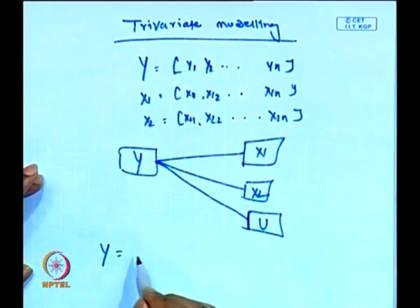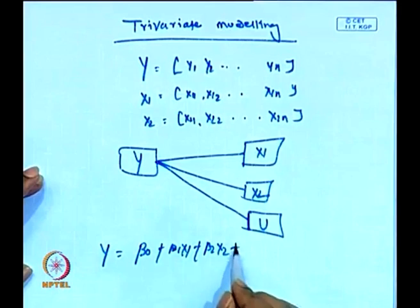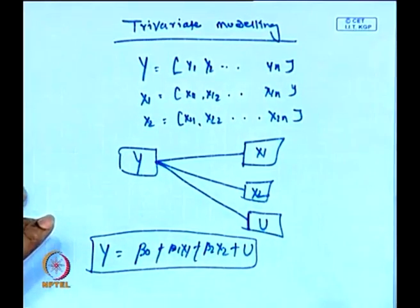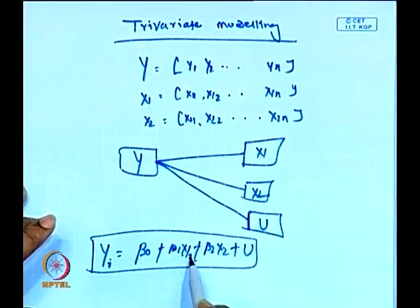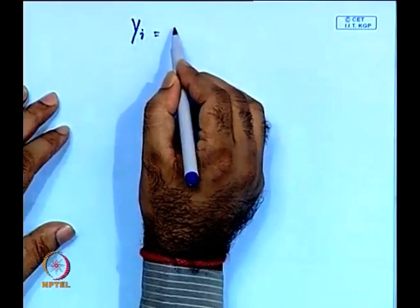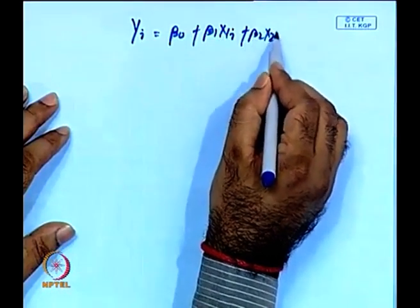We take the econometric model. If we put it in mathematical form, the econometric model is: y equals beta 0 plus beta 1 x1 plus beta 2 x2 plus u, the error term. With subscript i, the model is: y_i equals beta 0 plus beta 1 x1_i plus beta 2 x2_i plus u.